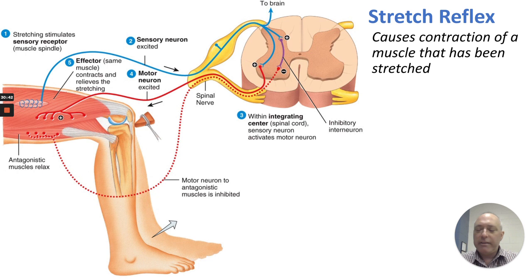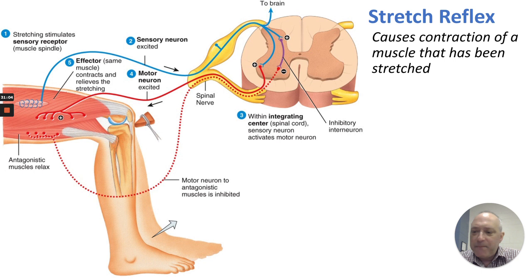The stretch reflex causes contraction of a muscle that has been stretched. A patellar hammer strikes the patellar tendon, simulating stretching of the thigh muscles. An afferent goes to the spinal cord, integrates, and inhibits the antagonistic muscle compartment while activating the agonist compartment, causing a kicking motion that shortens the stretched muscle. The tendon reflex is essentially the opposite — it causes relaxation of muscles attached to the stimulated tendon. In this case, the antagonistic muscles contract and the agonistic muscles relax. The stretch reflex operates as a feedback mechanism to control muscle length; instead of kicking, the tendon reflex causes the leg to tuck in, stretching the muscle.